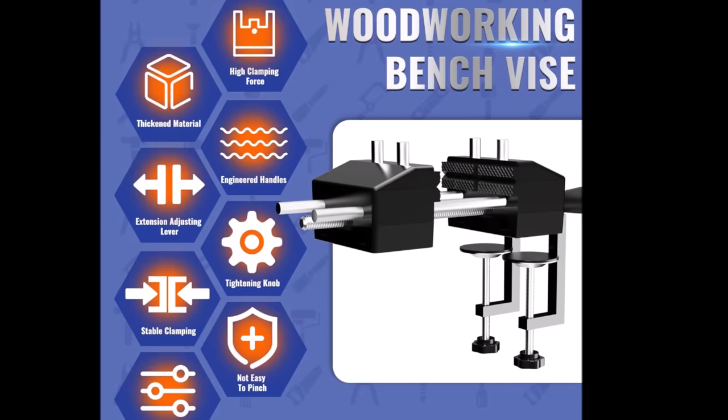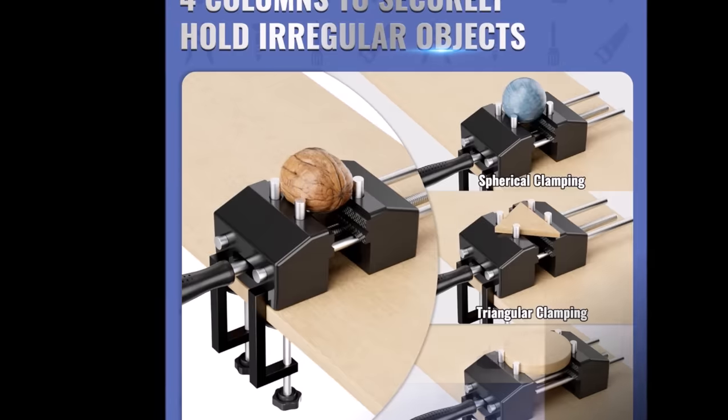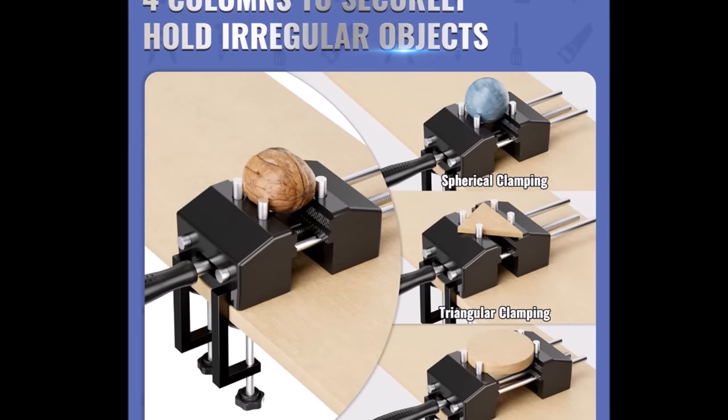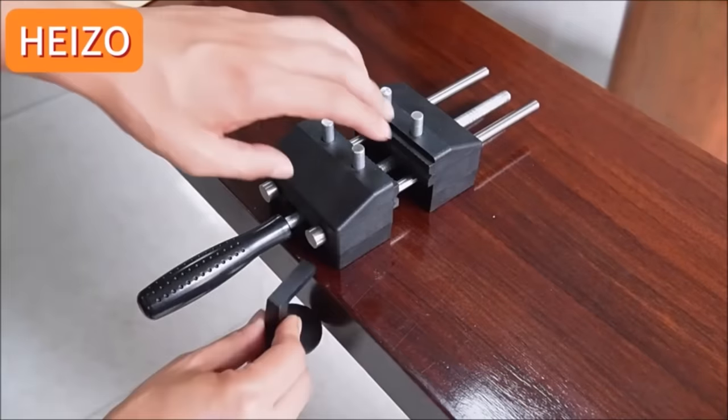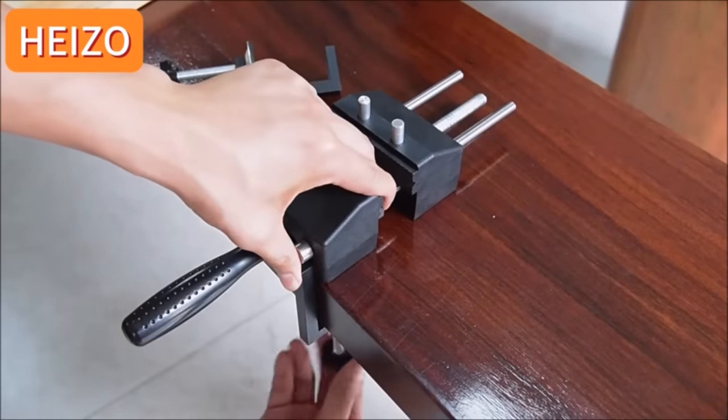Crafted from durable steel, this vice is built to last. The jaws, subjected to a forging process and hardened, provide exceptional strength and a reliable grip, ensuring longevity in woodworking, cutting conduit, drilling, and metalworking applications.